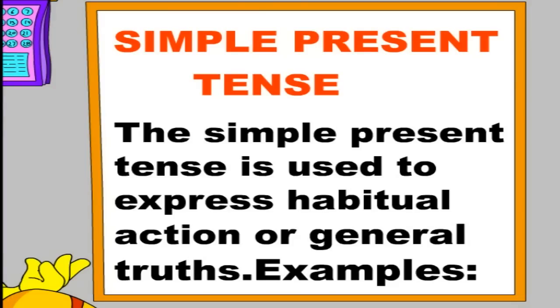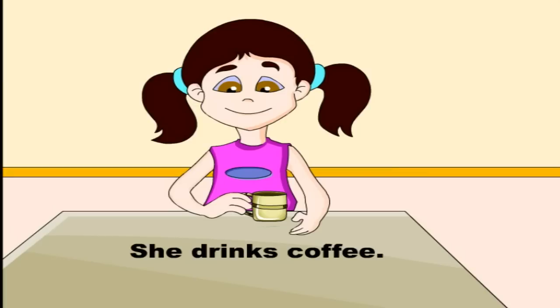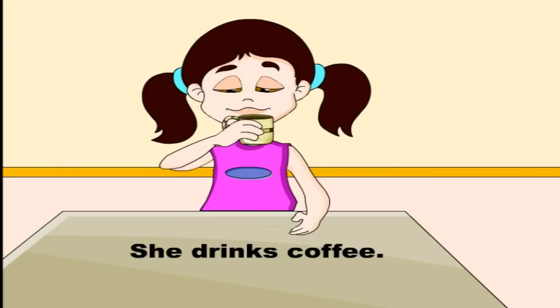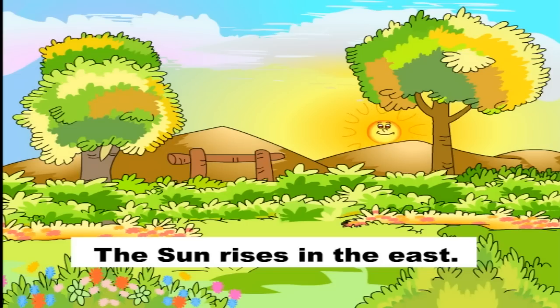Simple Present Tense. The Simple Present Tense is used to express habitual action or general truths. Examples: She drinks coffee. The sun rises in the east.